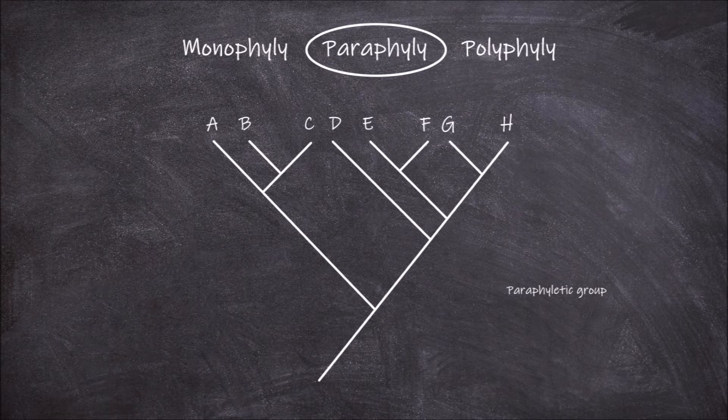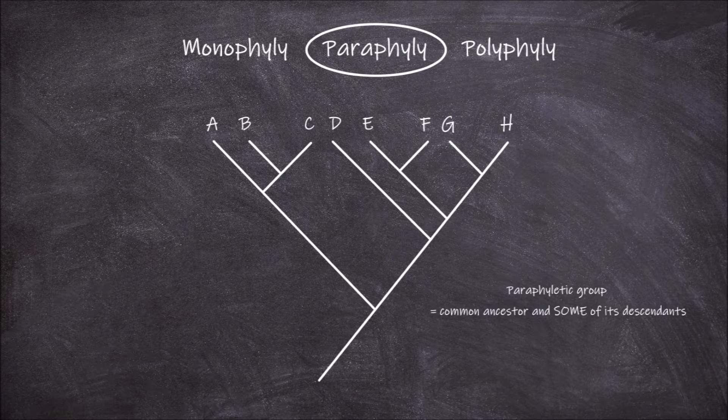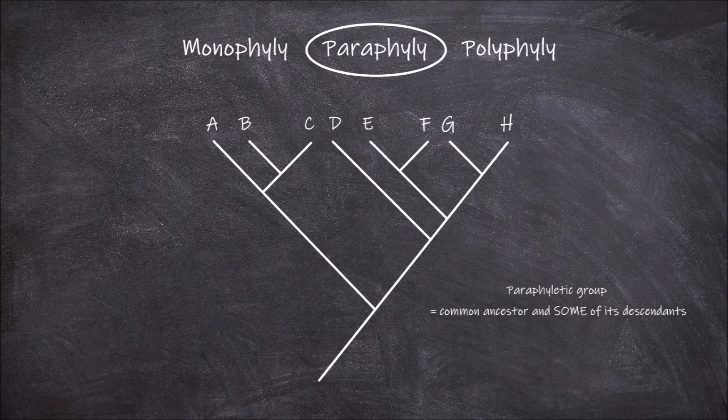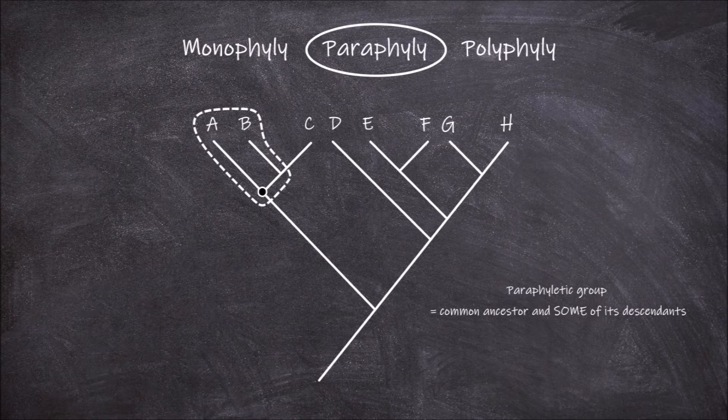Paraphyly refers to a group of taxa that include a common ancestor but only some, not all of its descendants. If we look at our theoretical phylogenetic tree again, a paraphyletic group here could be taxa A and B. They share the common ancestor at this node but this group does not include all of its descendants as it does not include C.